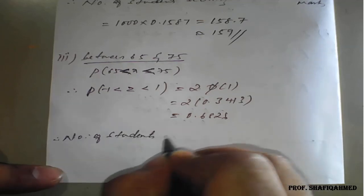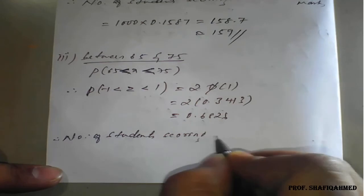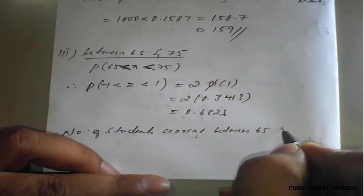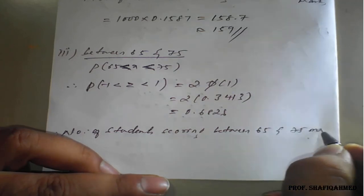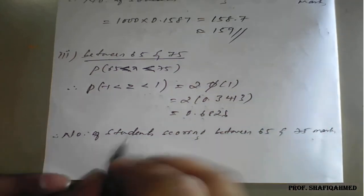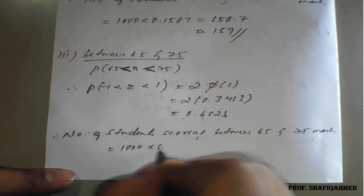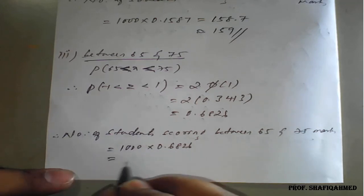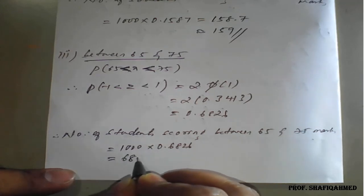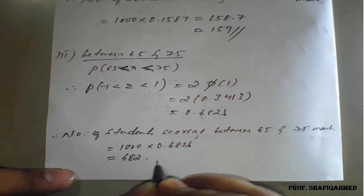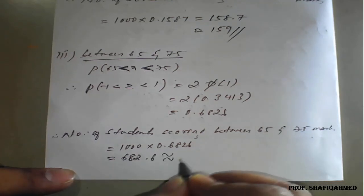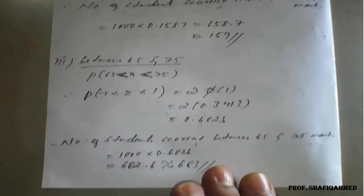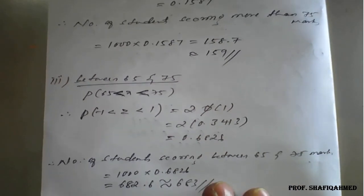Therefore, the number of students scoring between 65 and 75 marks is 1000 into 0.6826, giving 682.6, which is equivalent to 683 students. In this way we calculate problems based on normal distribution.